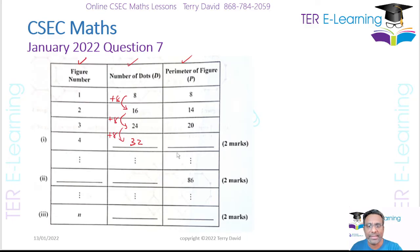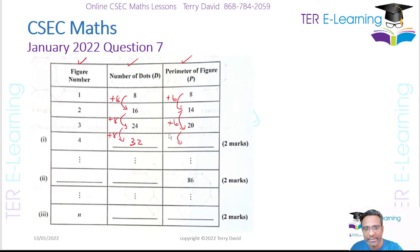The next thing is the perimeter. If you look at this, when you go from figure 1 to figure 2, your perimeter increases by 6. Going from figure 2 to figure 3, you are adding 6 again. So therefore for figure 4, I should add 6, and that should give me a perimeter of 26.